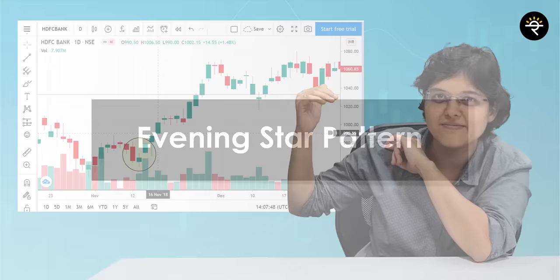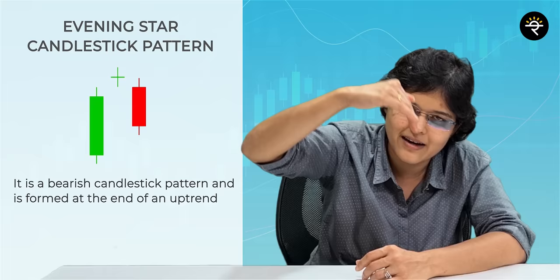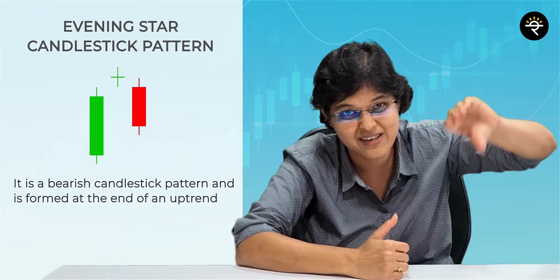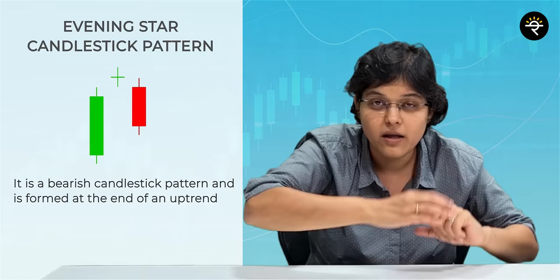Now let's understand the evening star pattern quickly. It's actually exactly the opposite of a morning star. The first candle will be a big green candle, followed by a doji, and then followed by a big red candle. It appears at the end of an uptrend — after a good uptrend, if you see an evening star, this is a sign of a reversal. There is a great chance that the market or that specific stock will move in a downward direction. If morning star at the end of a downtrend signals reversal upward, evening star at the end of an uptrend signals reversal downward.